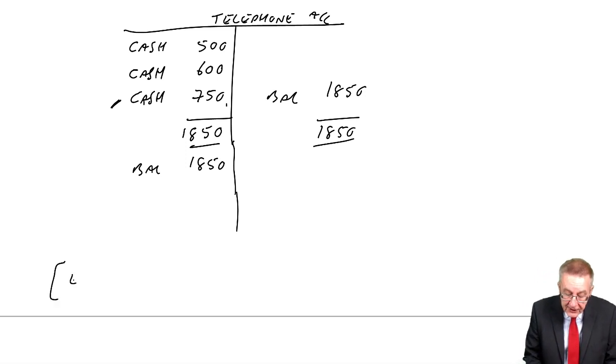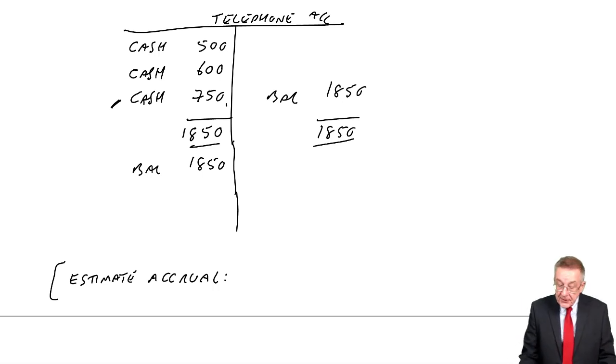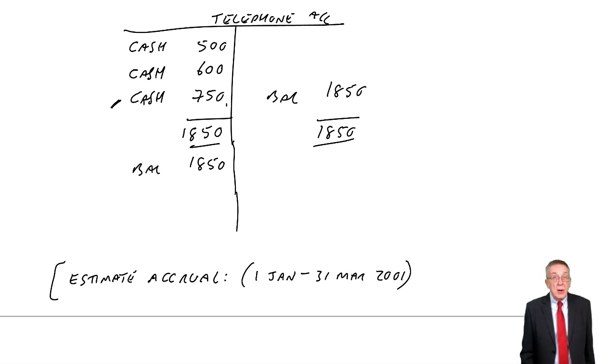And of course, when we look at the last payment, we see that we've only paid up to December and our year ends in March. And so we owe money. We estimate the accrual. The accrual, remember, we've only paid to December, so we still owe for 1st of January to 31st of March 2001.